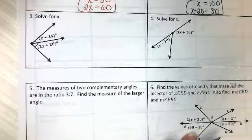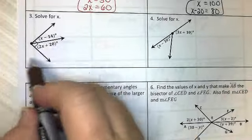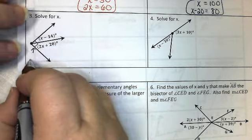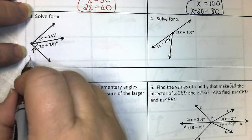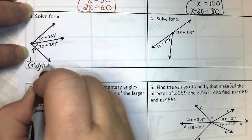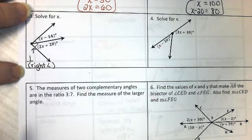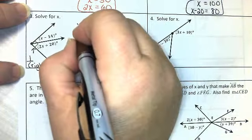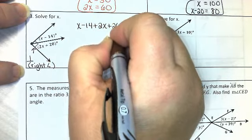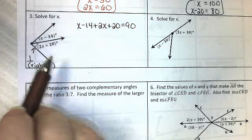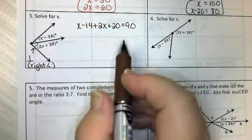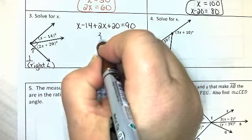Solve for x. So in this picture, I want you to notice this box. That box means that those two rays are perpendicular, which makes that a right angle. And we know that right angles are equal to 90 degrees. So I'm going to say x minus 14 plus 2x plus 20 equals 90. There's angle addition. The little angle plus the little angle equals the whole thing. So we solve our equation.